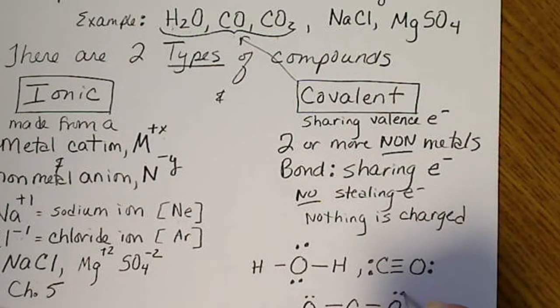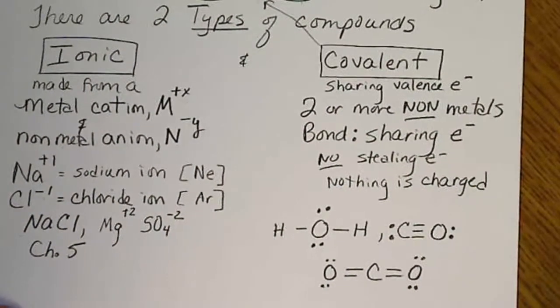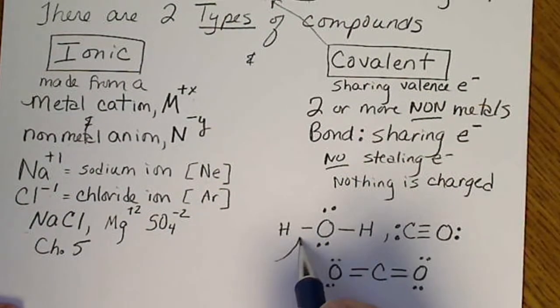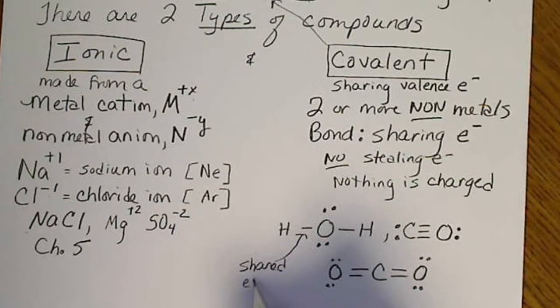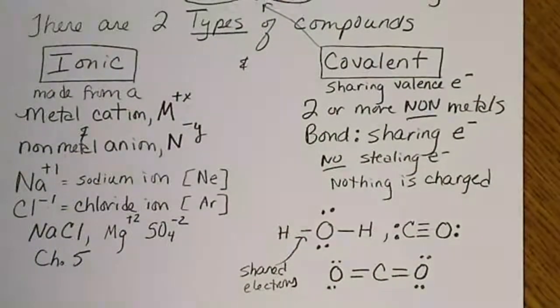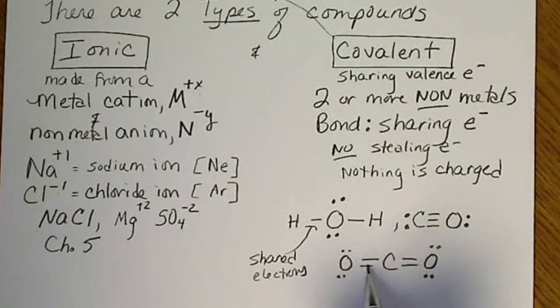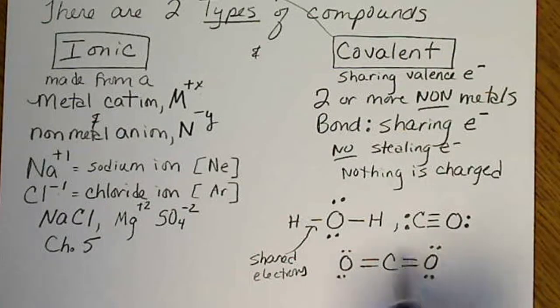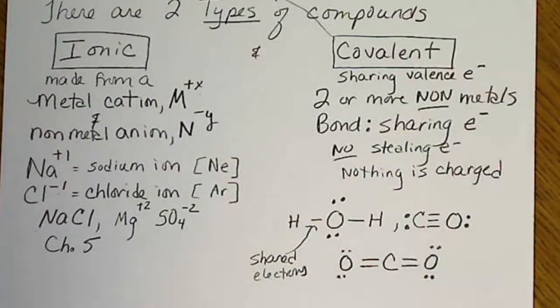So the dots are now electrons and shared electrons are going to be represented by a line. And we are going to be concerned about every atom still getting eight electrons around it, except hydrogen.